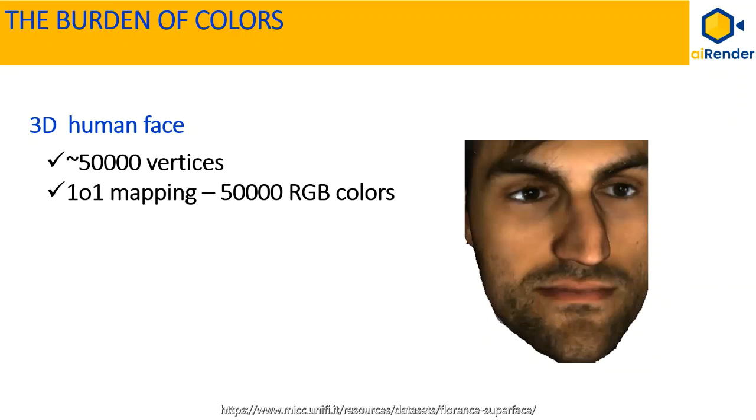First of all, let's see why we need texture sampling. Let's take an example of a high-quality 3D face like the one shown on the right side. A typical high-quality 3D face requires anywhere between 40,000 to 60,000 vertices. If we were to take each vertex separately, it requires an RGB color value per vertex, amounting to around 40,000 to 60,000 RGB color values. That takes a lot of space in memory to store the values.